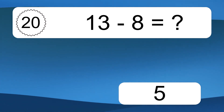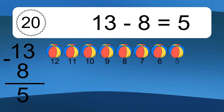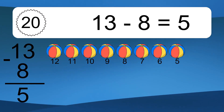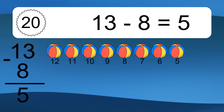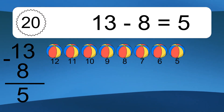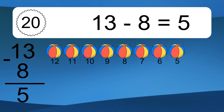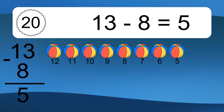13 minus 8 equals what? 13 minus 8 equals 5. Let's count it: 12, 11, 10, 9, 8, 7, 6, 5.